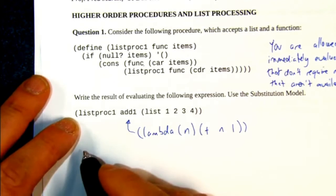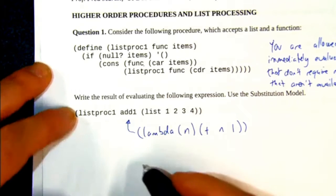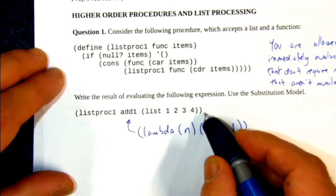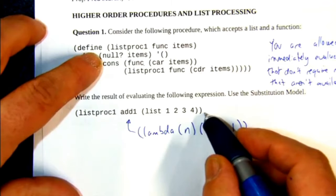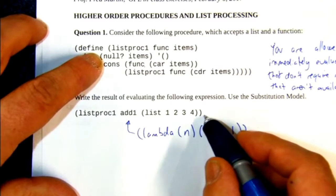So here we go. We're going to go ahead and evaluate this. We dive in. Items are not null. It's the whole list, 1, 2, 3, 4. So we're going to evaluate a cons statement.